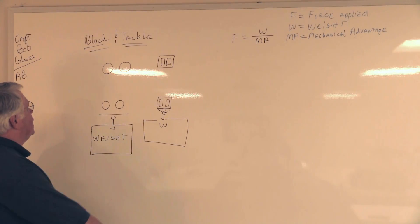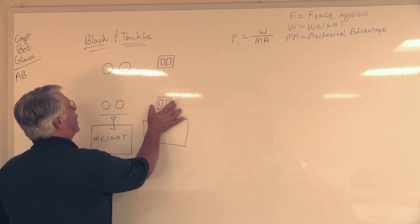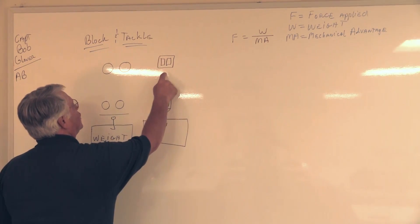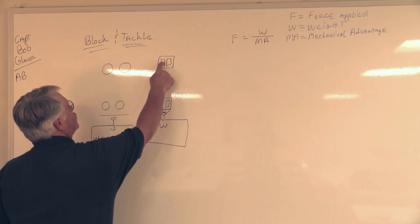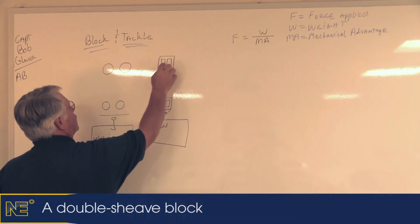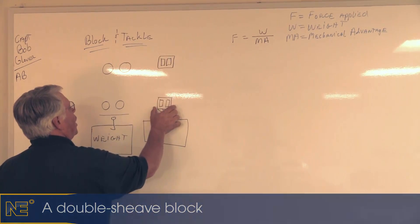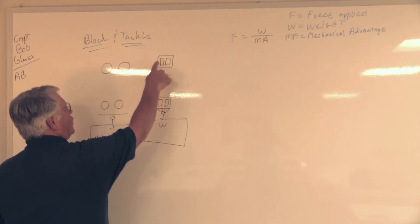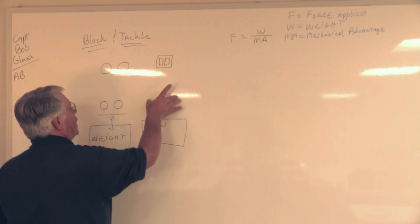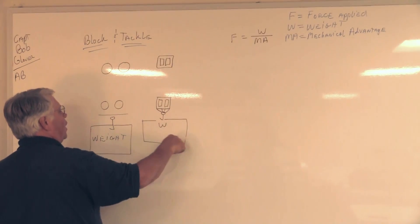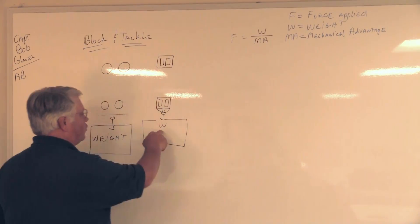What I've drawn here on the board is a way of explaining this and showing the mechanical advantage. I've taken a typical double shiv block with a shiv in each side - a double block here and a double block here. Underneath it, I put a block with a W in it, representing weight.